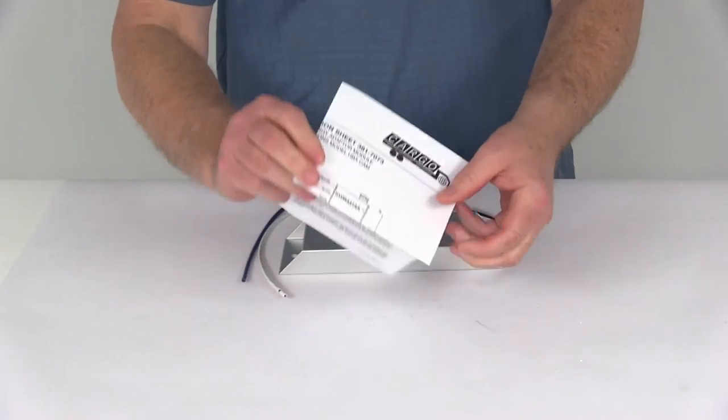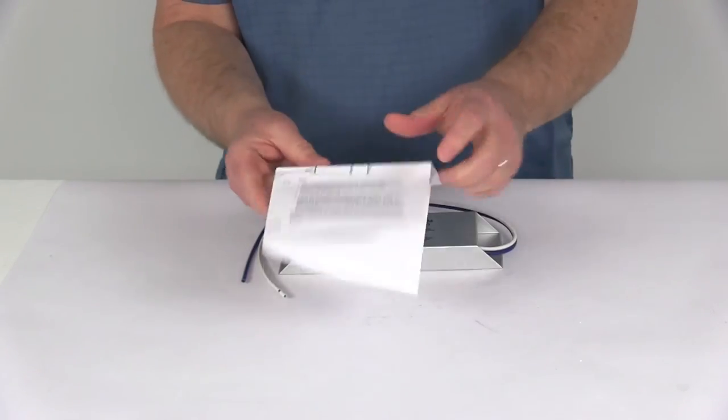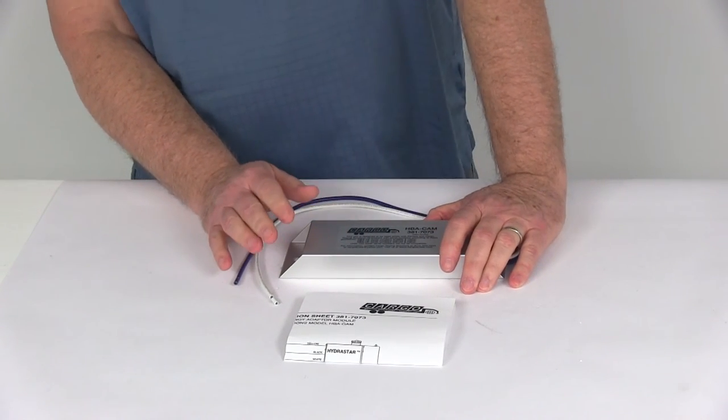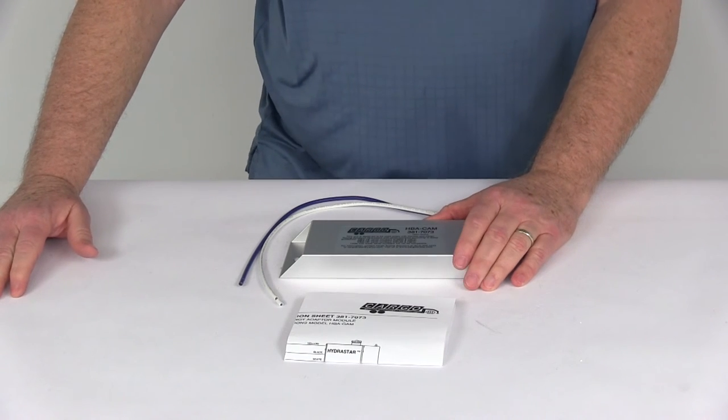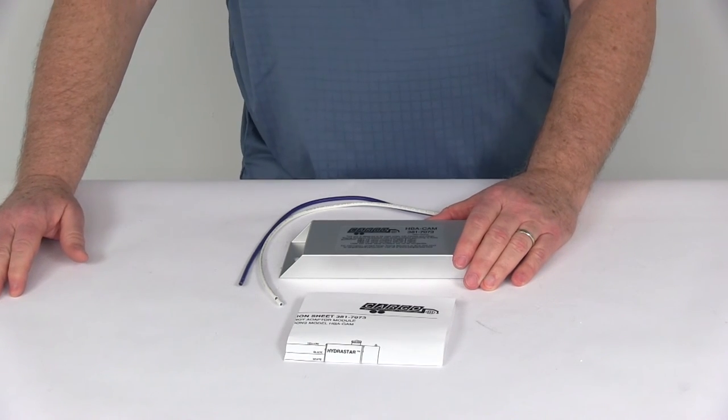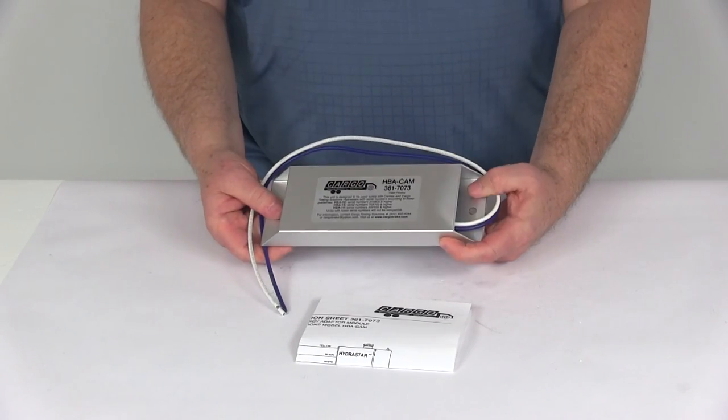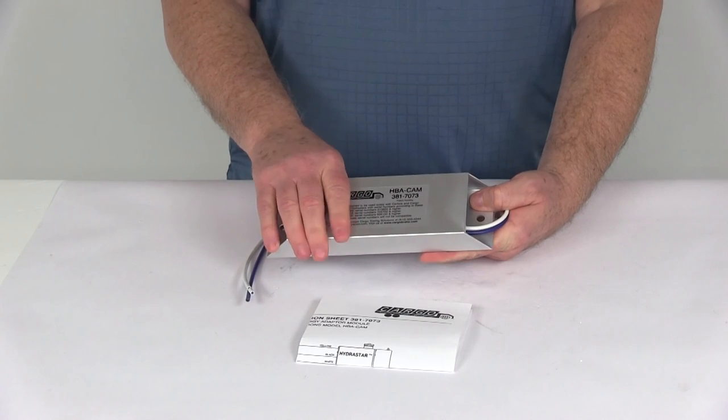And it does come with a nice set of detailed instructions that will describe how to connect it and how it works. And again, just to reiterate, it works with the 2007 to 2008 Ford factory brake controllers and the 2007 to present GMC Chevrolet factory brake controllers. That should do it for the review of the Hydrostar controller adapter module for Hydrostar electric over hydraulic brake actuators.